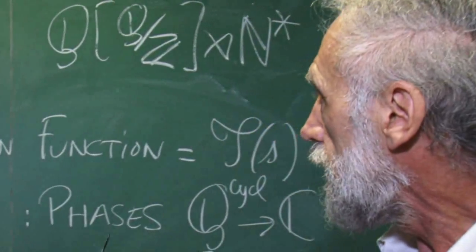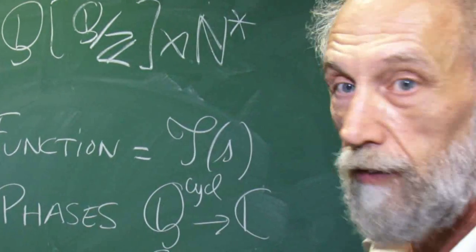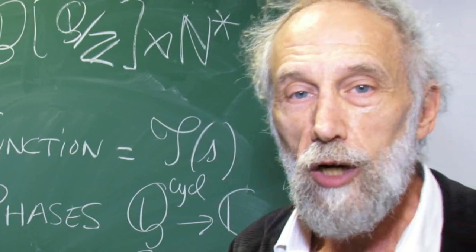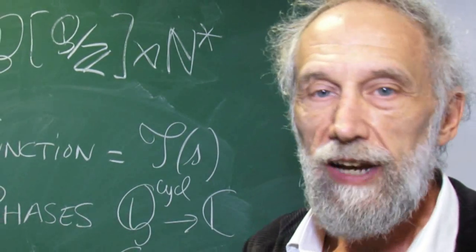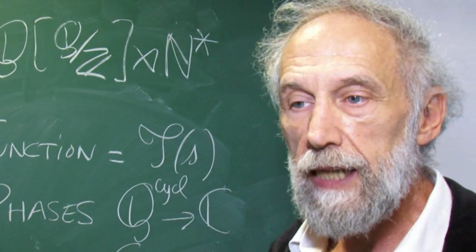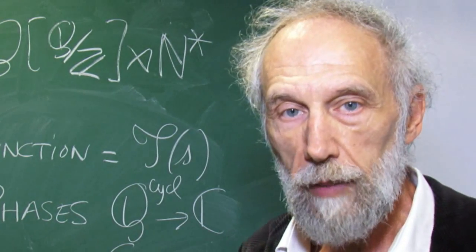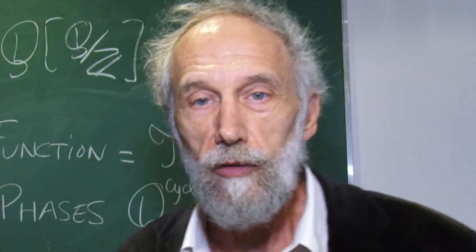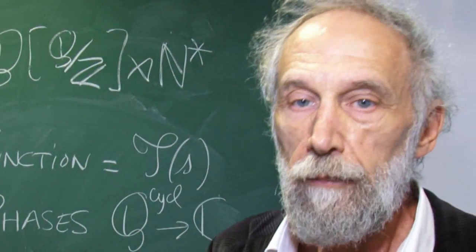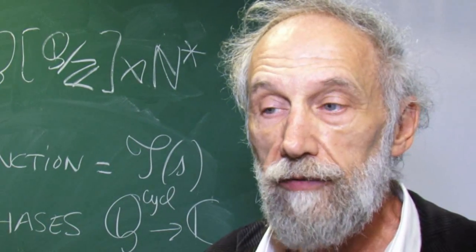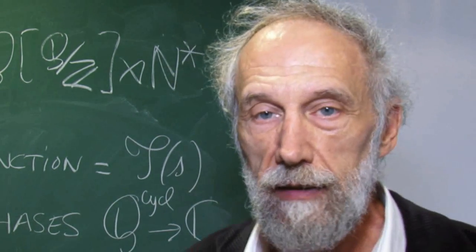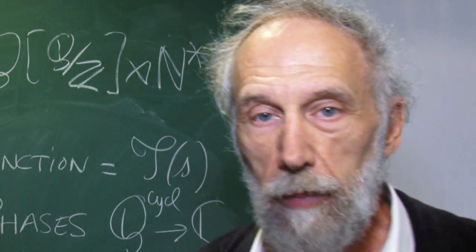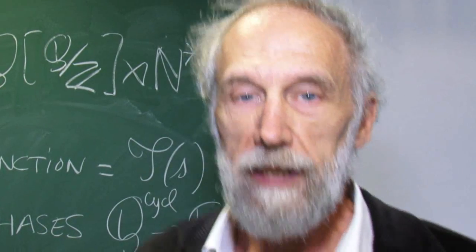First, its partition function is the Riemann zeta function. Second, it undergoes spontaneous symmetry breaking with a phase transition, and the pure phases are parametrized by the embeddings of the cyclotomic field in the complex numbers. Third — and this is most important, from recent work with Consani and Marcolli — the dual system gives a spectral realization, from a homological standpoint, of the zeros of the Riemann zeta function.